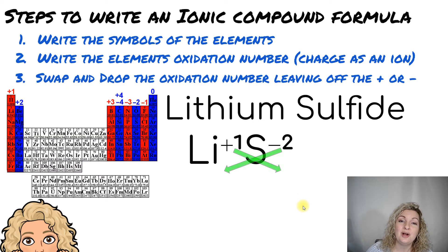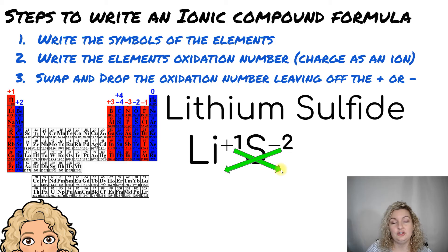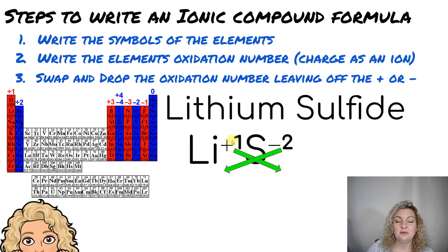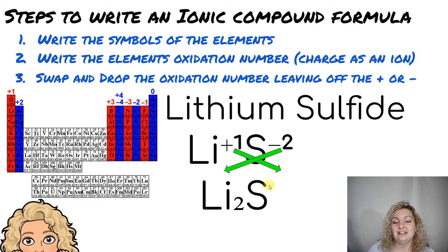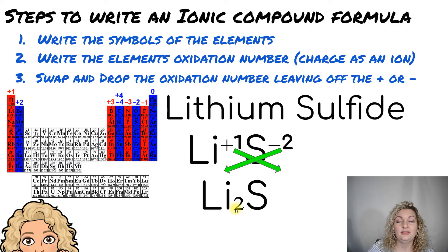And then we're going to use our swap and drop method. All you do is you take those oxidation numbers, you swap them to the other element, and you drop them down from a superscript to a subscript. So they were on the top, now they're on the bottom. They were with one element, now they're with the other element. That's all it is — a swap and a drop down. You notice the one is now on the sulfur, and that is understood, so we don't have to write it. And our two is now with our lithium. This is the correct formula for lithium sulfide.